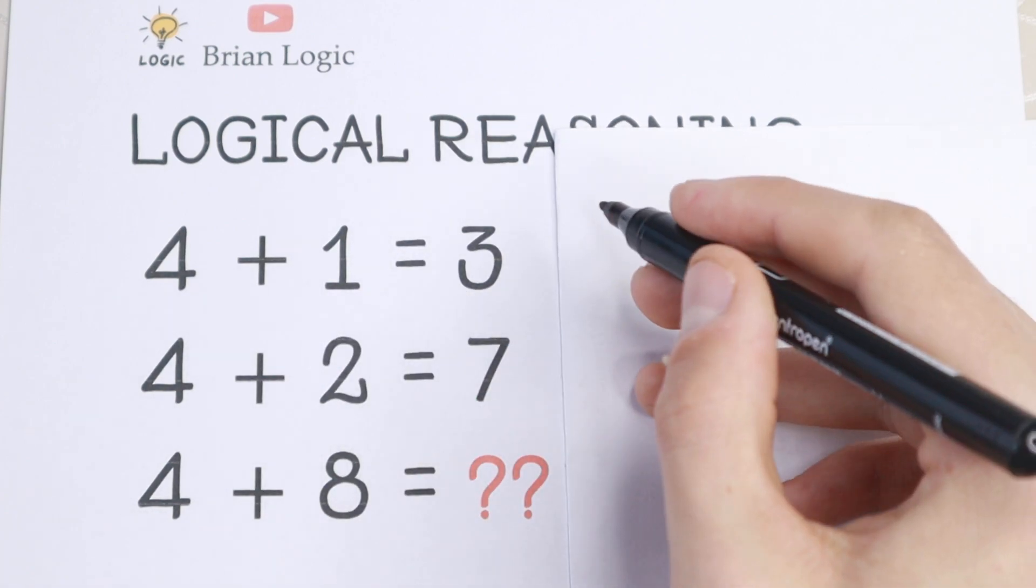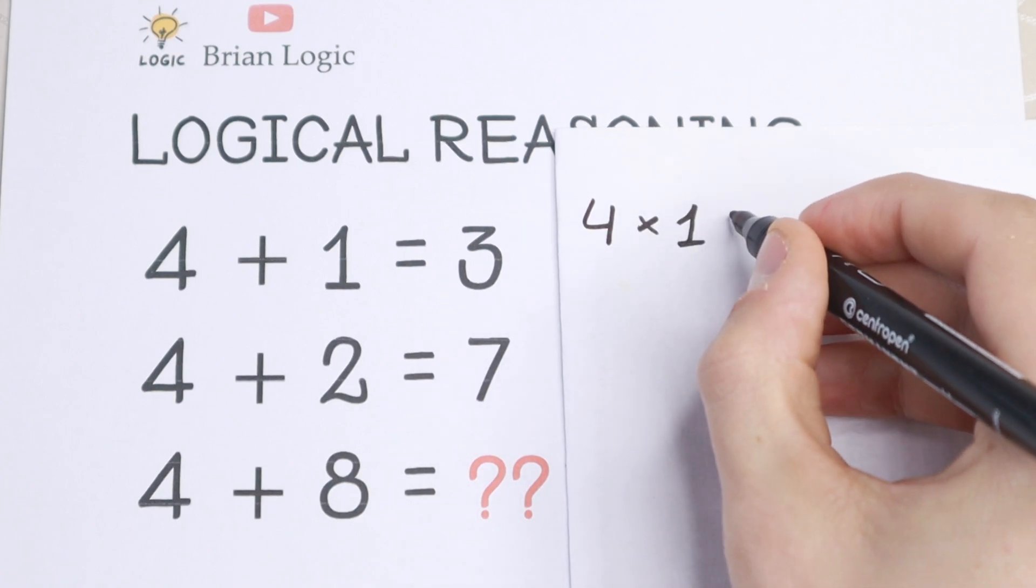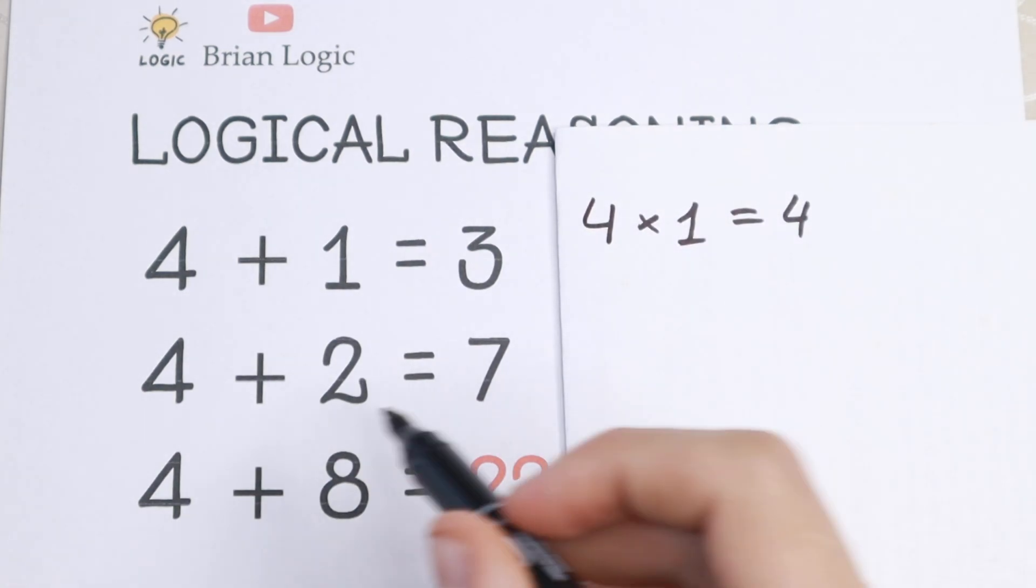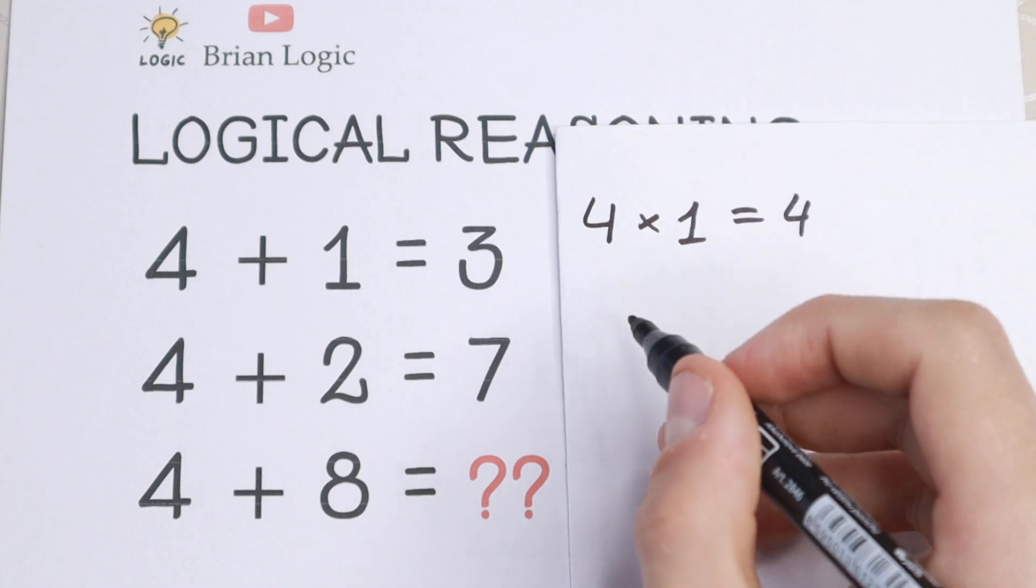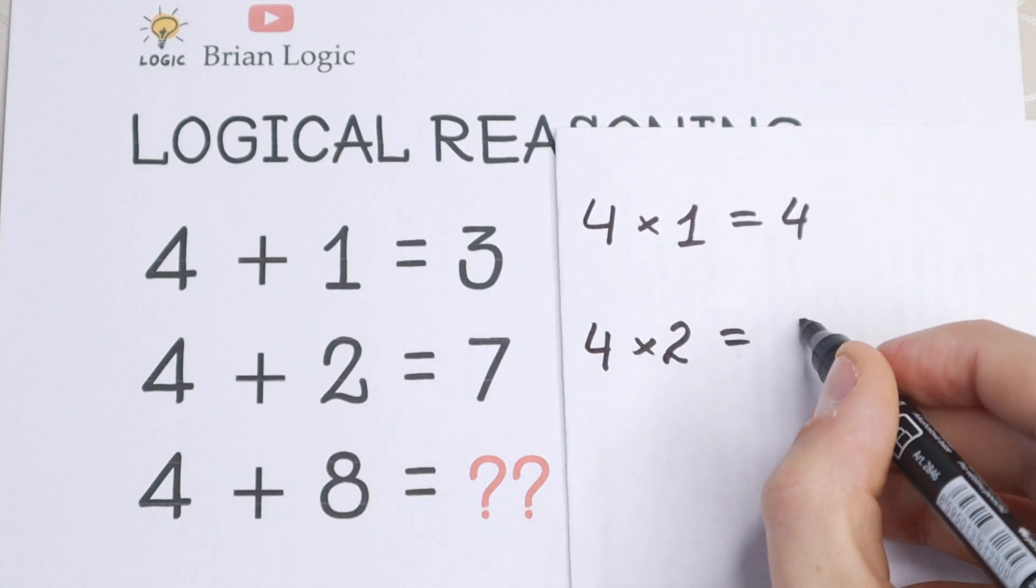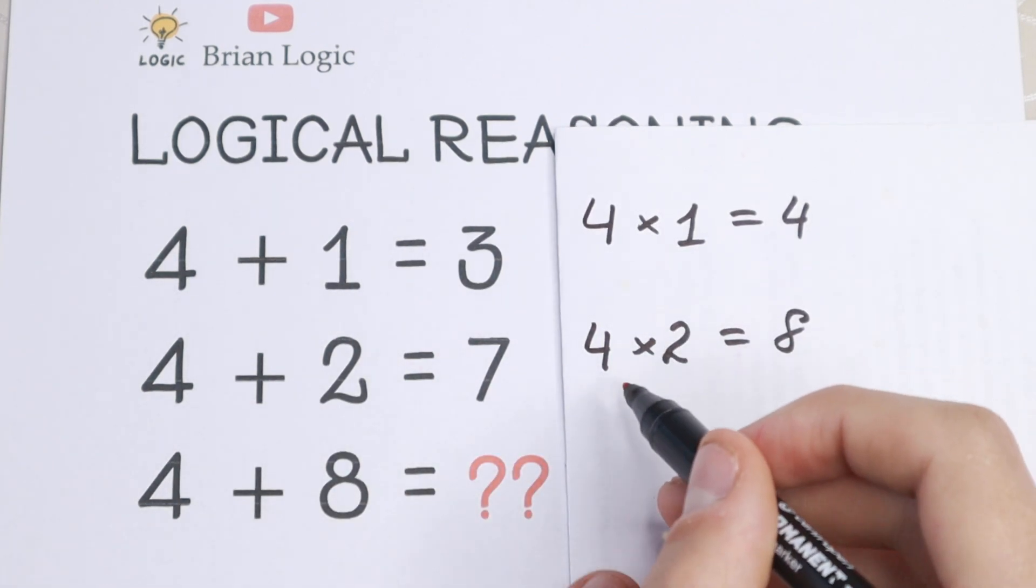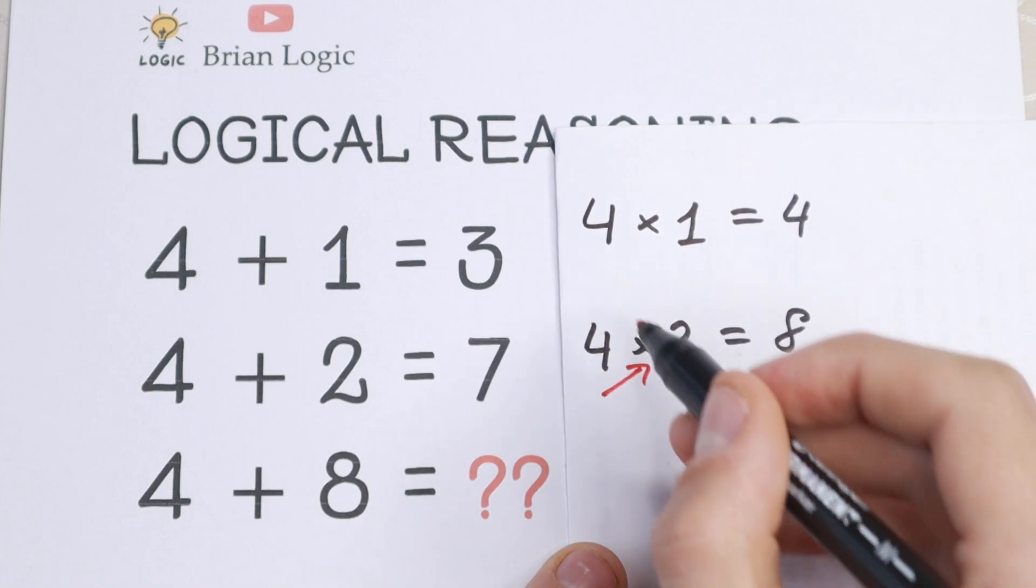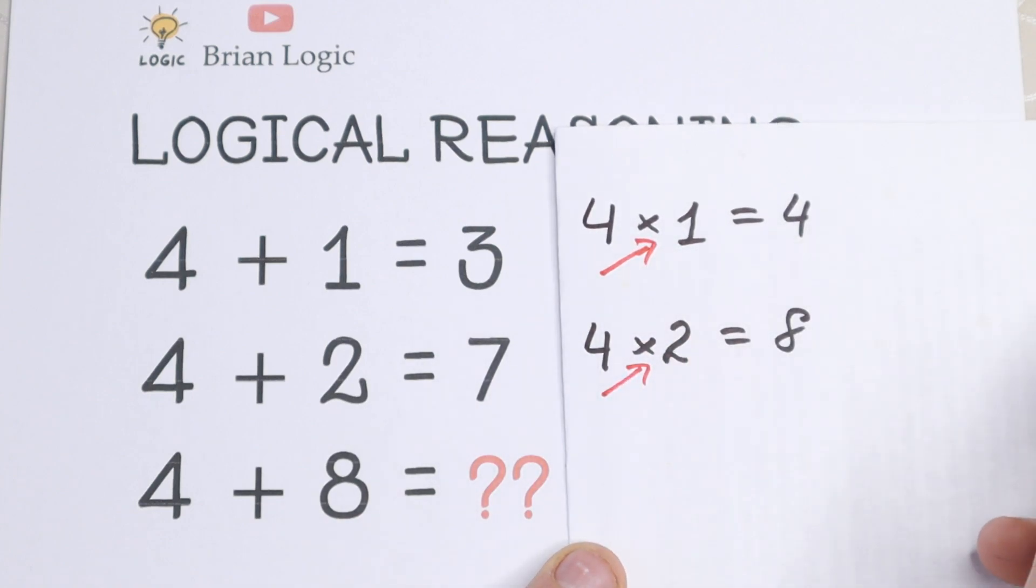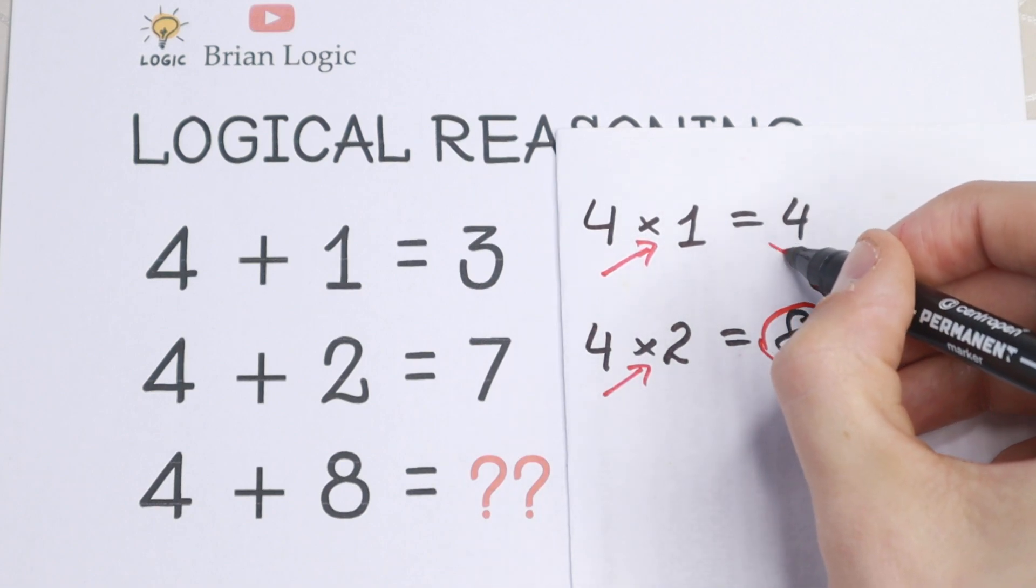Let's change addition to multiplication. So 4 times 1, we will have 4. And let's change the next row to multiplication. So not 4 plus 2, but 4 times 2, it will be equal to 8. So as you can see we did one thing, we changed addition to multiplication. Not 4 plus 1, but 4 times 1. Not 4 plus 2, but 4 times 2. And as you can see we find the numbers 8 and 4.